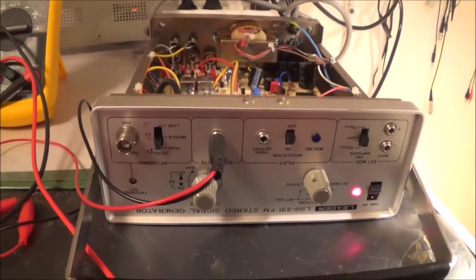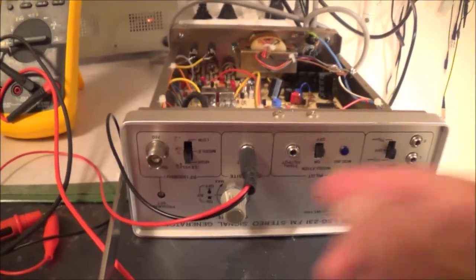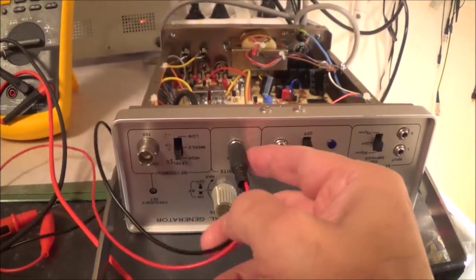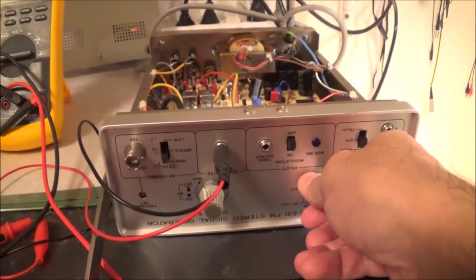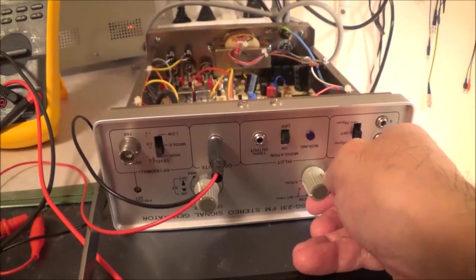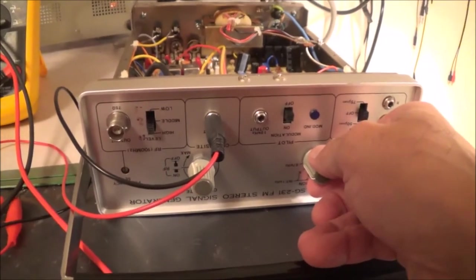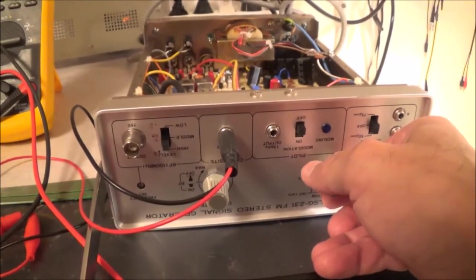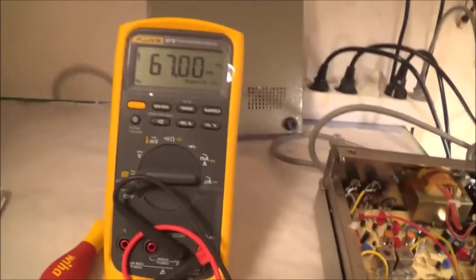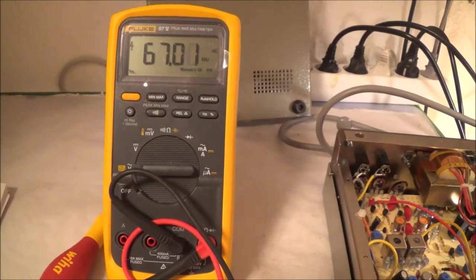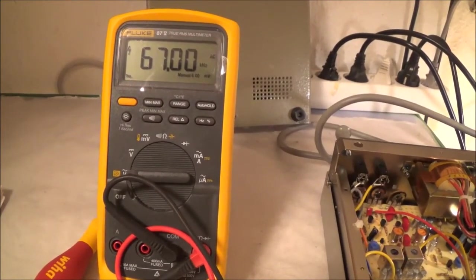The last thing I do is check for the kilohertz frequency. And of course I take the measurement off of the composite audio jack. And I put this in the 67 kilohertz position. Anything else I need to do? No, I don't think so. And here's the frequency 67 kilohertz. So I think that concludes the adjustments.